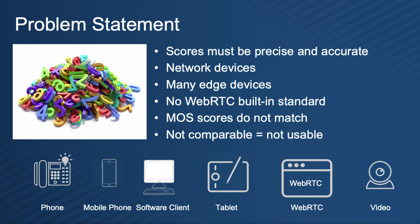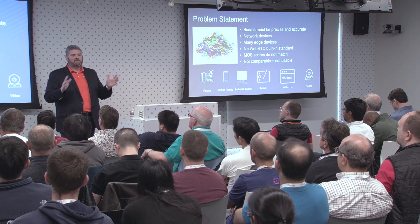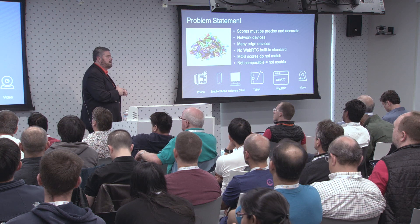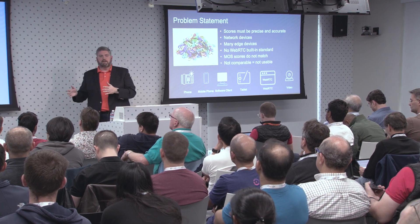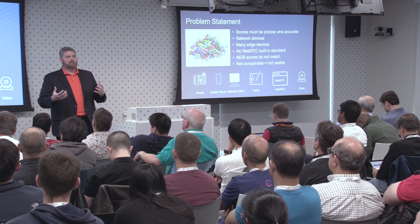Piling all that data together presents some interesting issues. For MOS to be comparable at that scale — one being bad, five being perfect — scores need to be precise and accurate. In the two e-models already in published use, there's already a disconnect. In one model, a G.711 call has a maximum MOS score of 4.41; in another e-model the maximum is 4.19. So our network devices aren't even consistent — border controllers report MOS scores differently, and even within model sequences of border controllers, they give out different values.